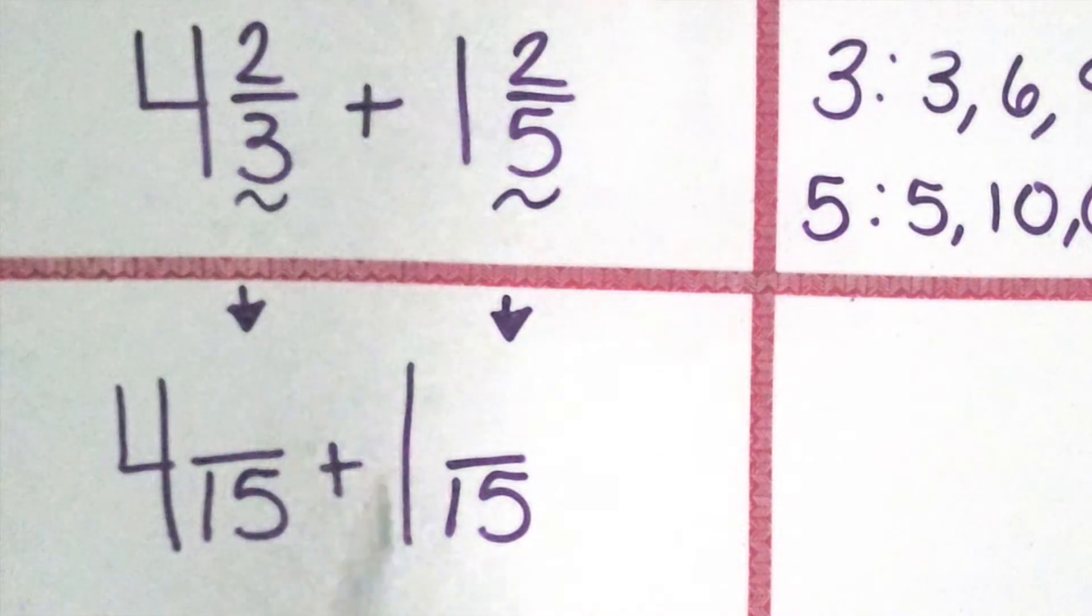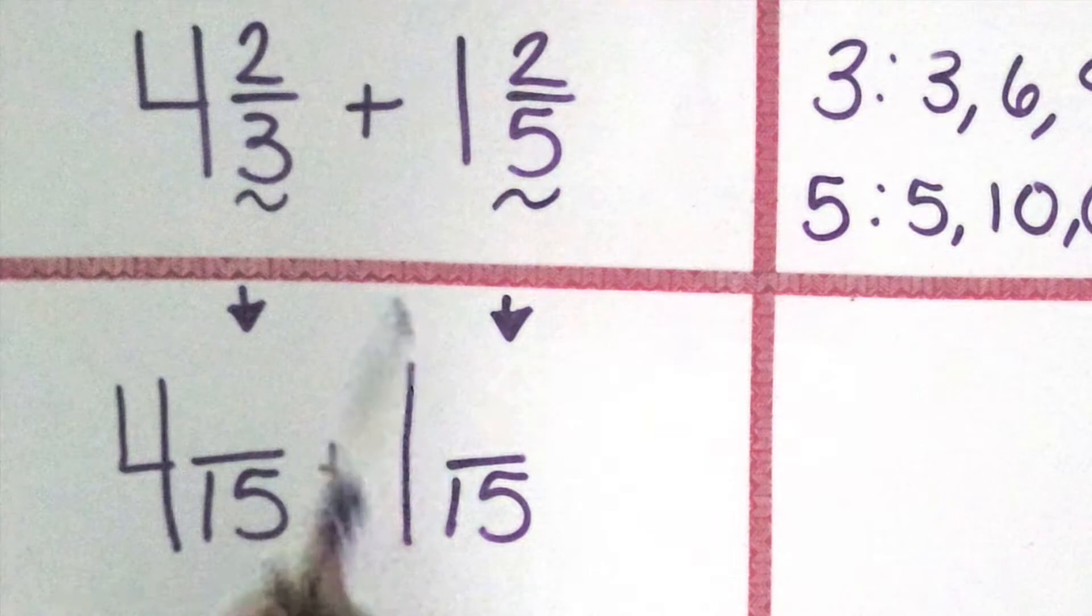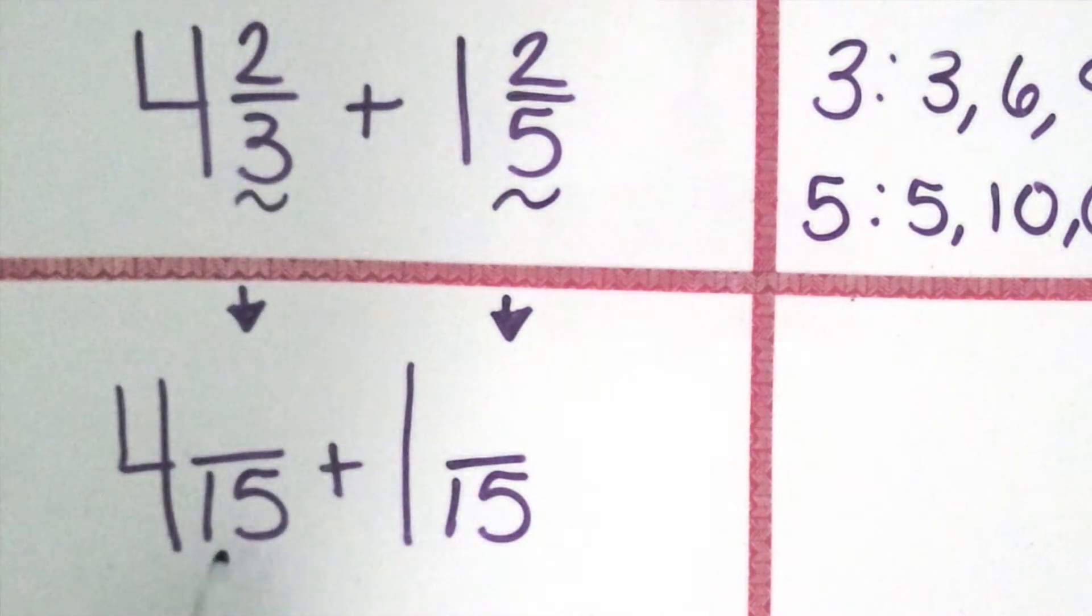Remembering our work with fractions, we know that the numerator and denominator are a team. They stick together. So if one of them changes when thinking about equivalent fractions, the other one does too.